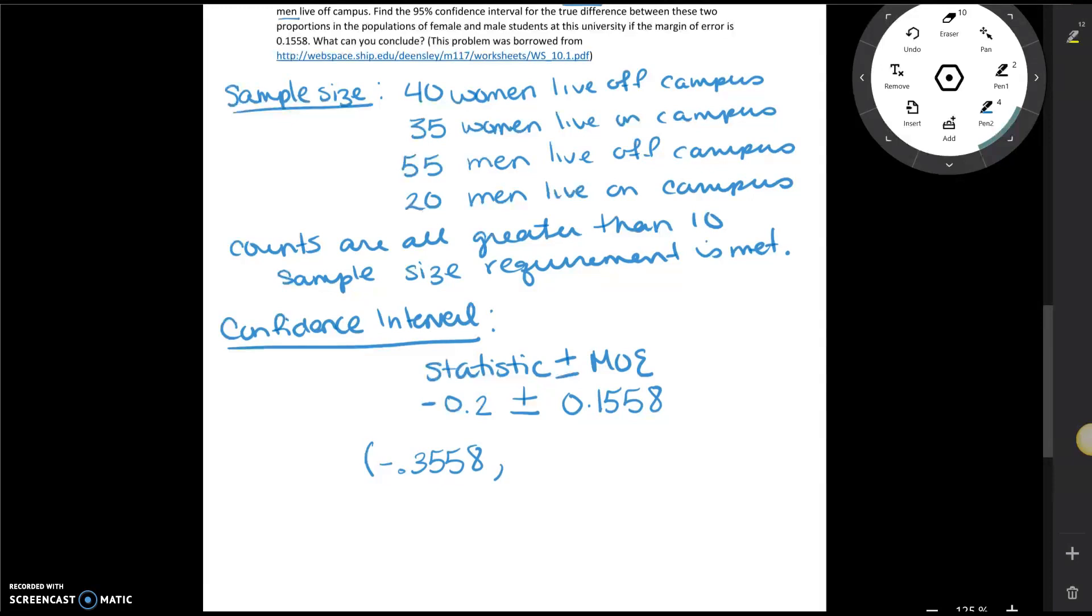And then to get the upper bound we're going to take negative 0.2 plus 0.1558. And that gives us negative 0.0442.